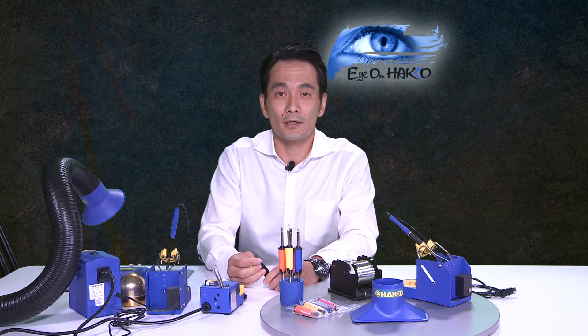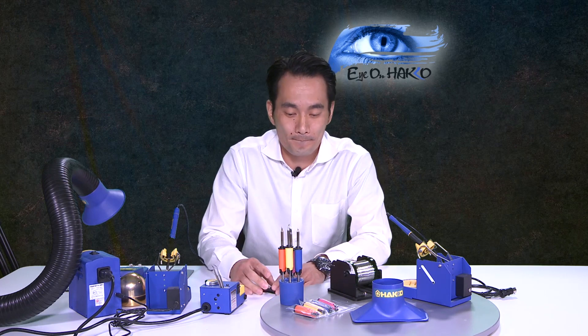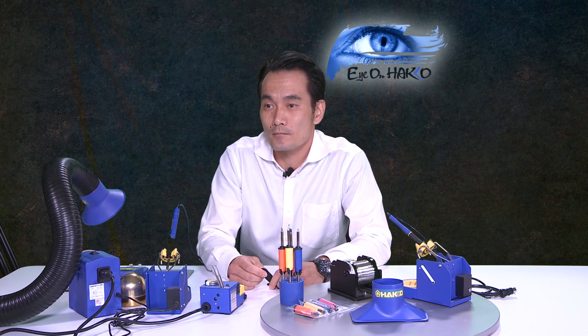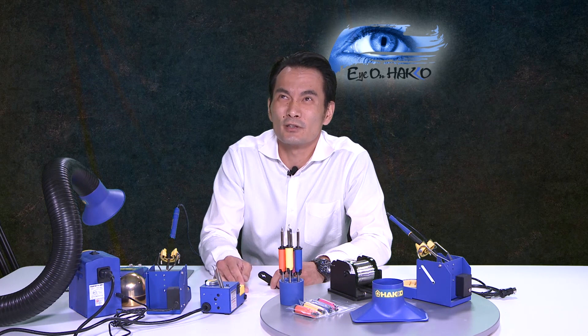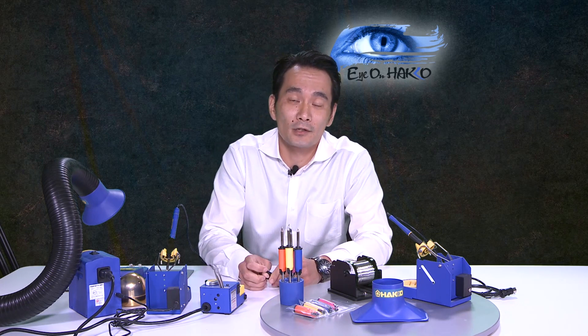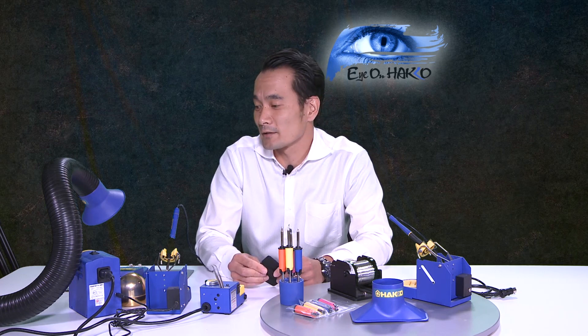At this point I'll take some questions if we have any. What is the finest tip available for 00105 component rework? Maybe 005. I would recommend a micro iron, a micro iron in the I shape for use with the FX-951.